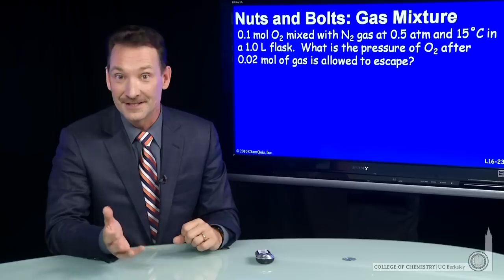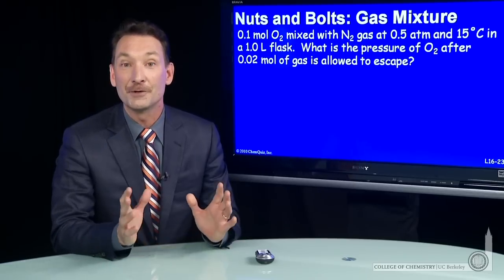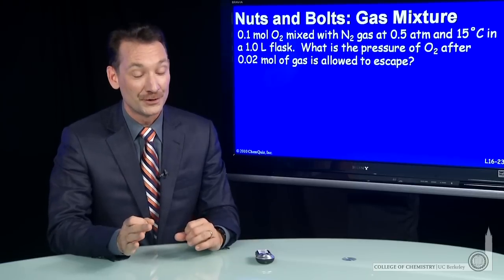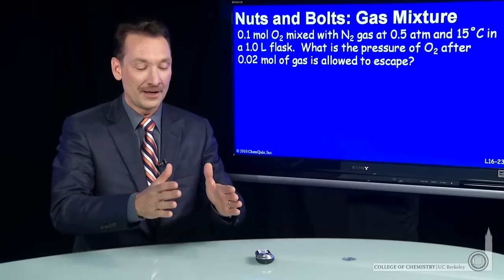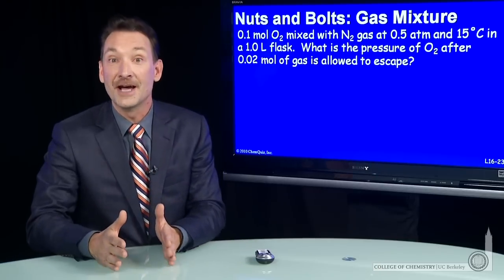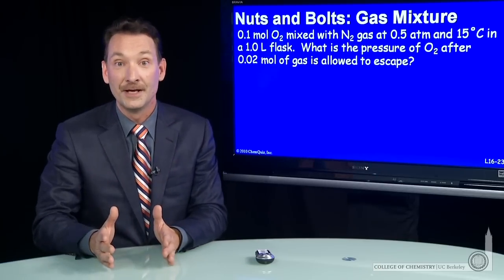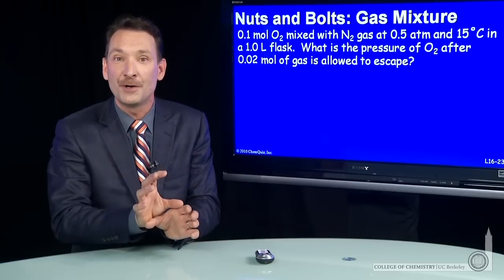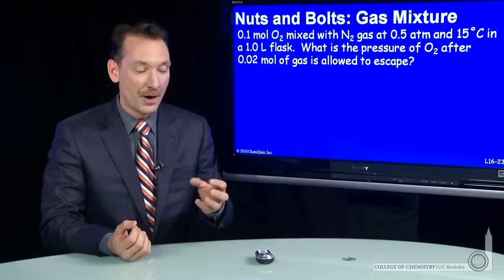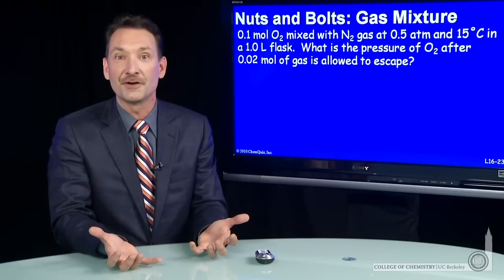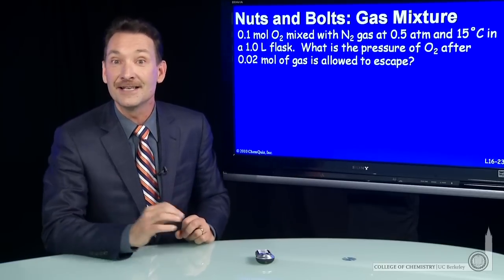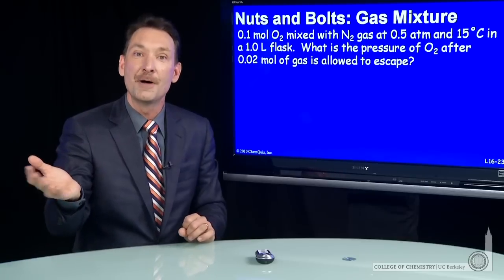Let's do a calculation involving mixtures of gases and the ideal gas law. When you have a mixture, each gas behaves like it has the whole volume to itself. So if you have a mixture of oxygen and nitrogen, you can calculate the pressure of the oxygen all by itself using the whole volume, the pressure of nitrogen by itself using the whole volume, and then the total pressure will be the sum of those two pressures. Each gas will exert what's called a partial pressure. Each gas behaves like the other gas is not even there — it's occupying the entire volume by itself.